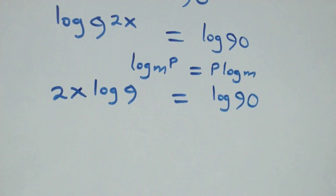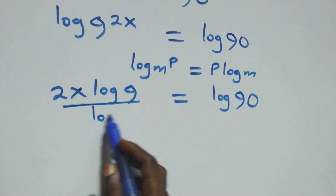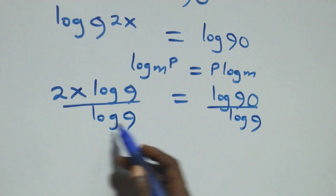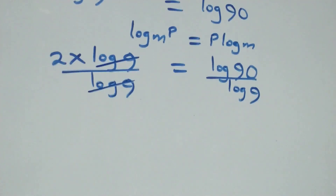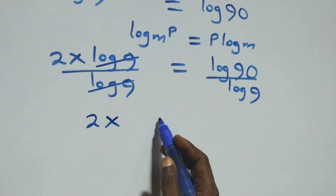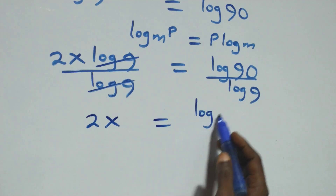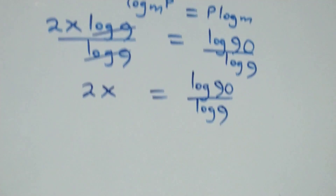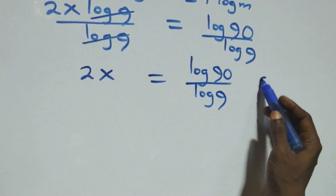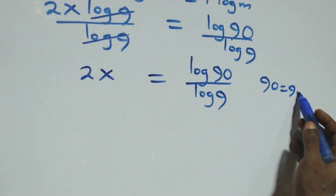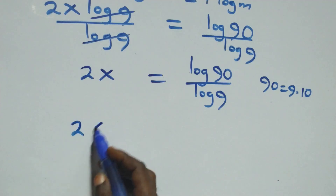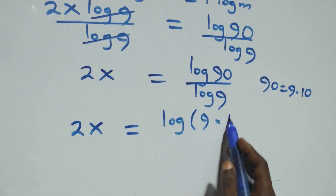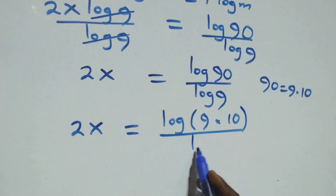Then next step here, we divide both sides by log 9. That is, divide this side by log 9 and also divide this side by log 9. Which implies log 9 cancels each other here, and we have 2x equals to log 90 over log 9.